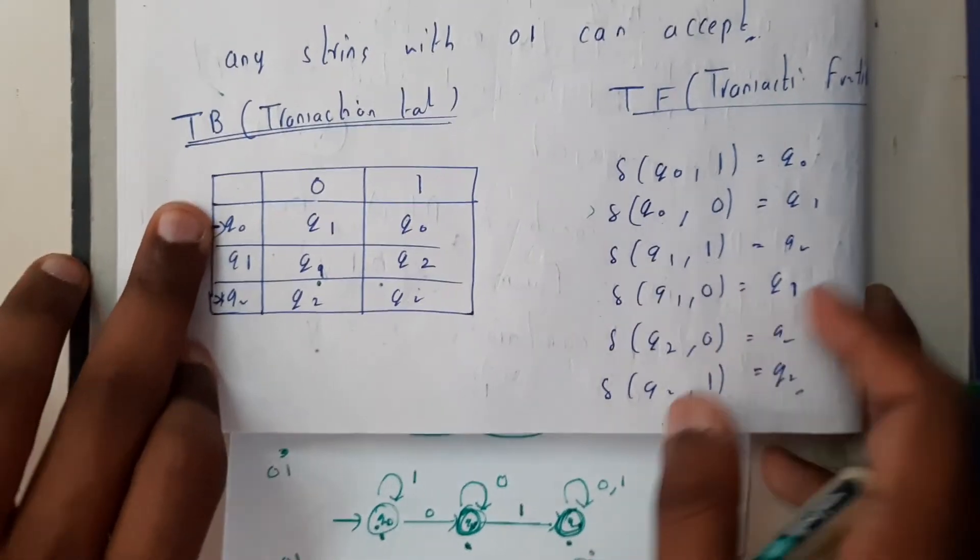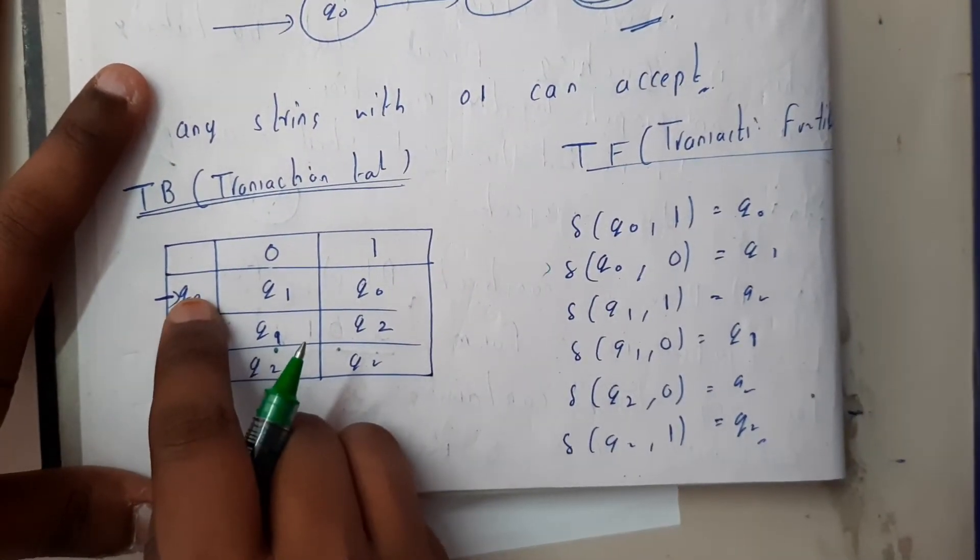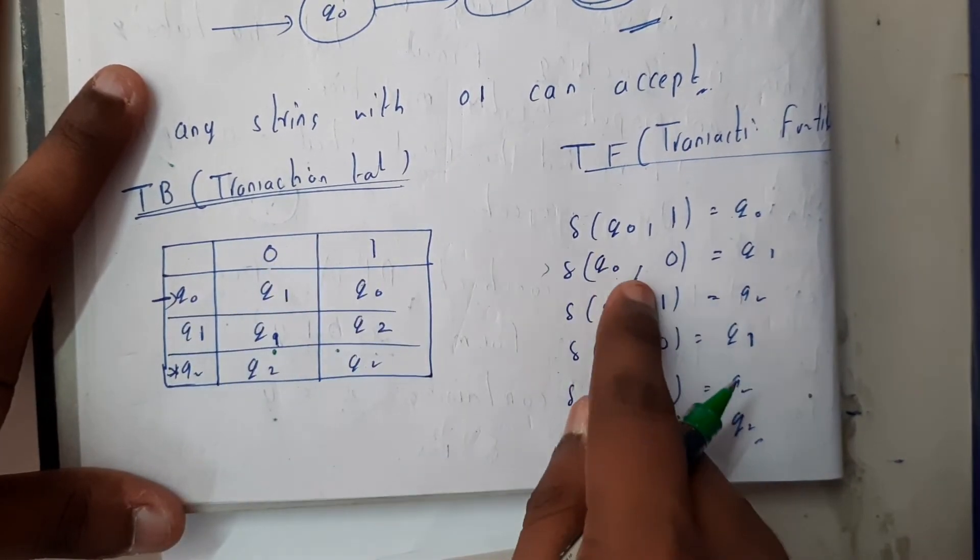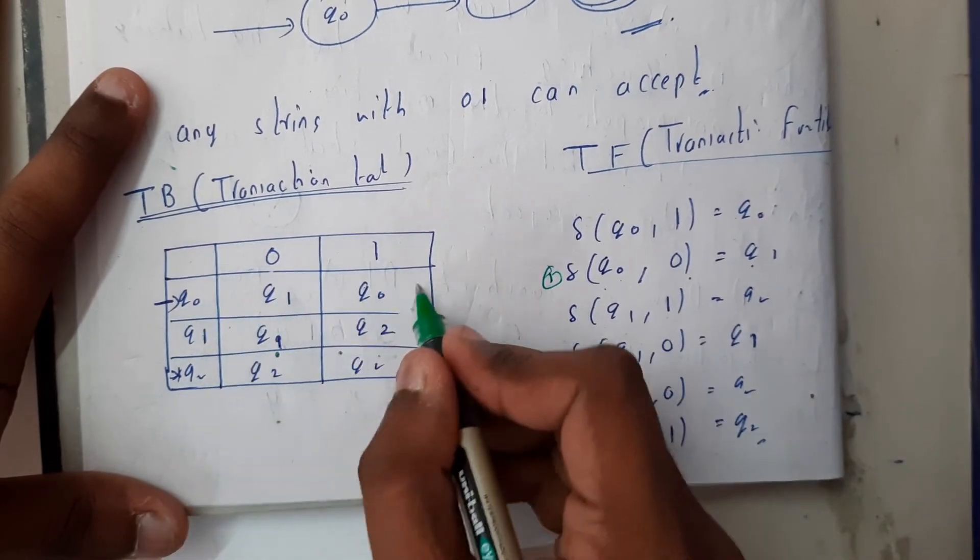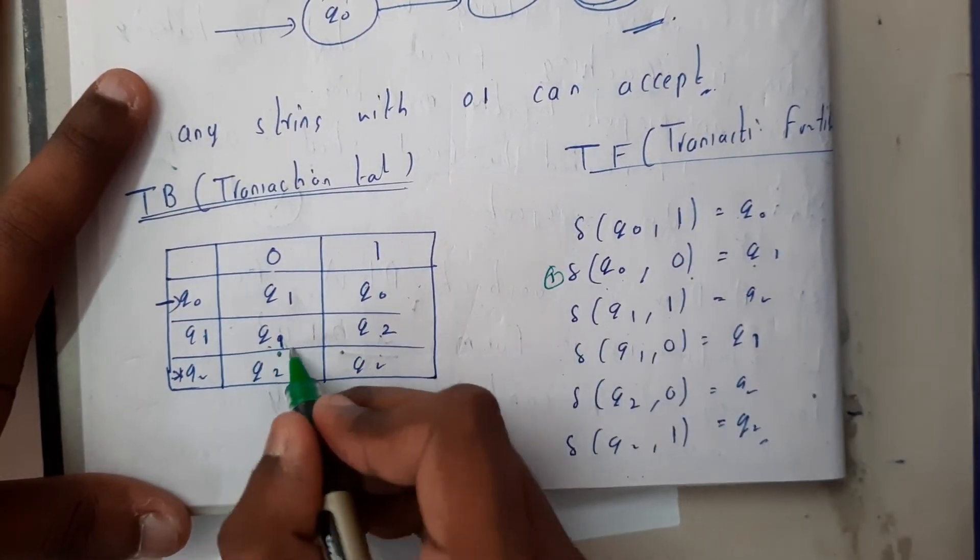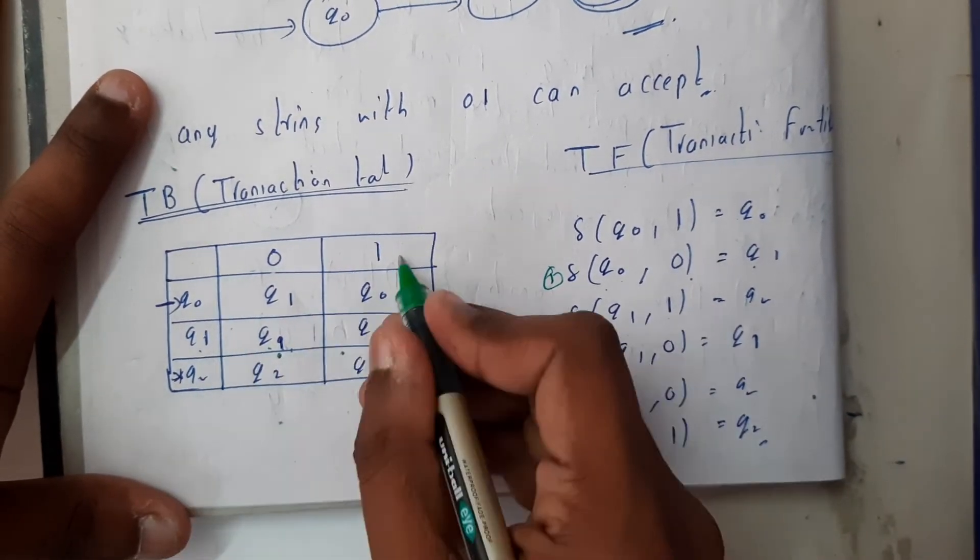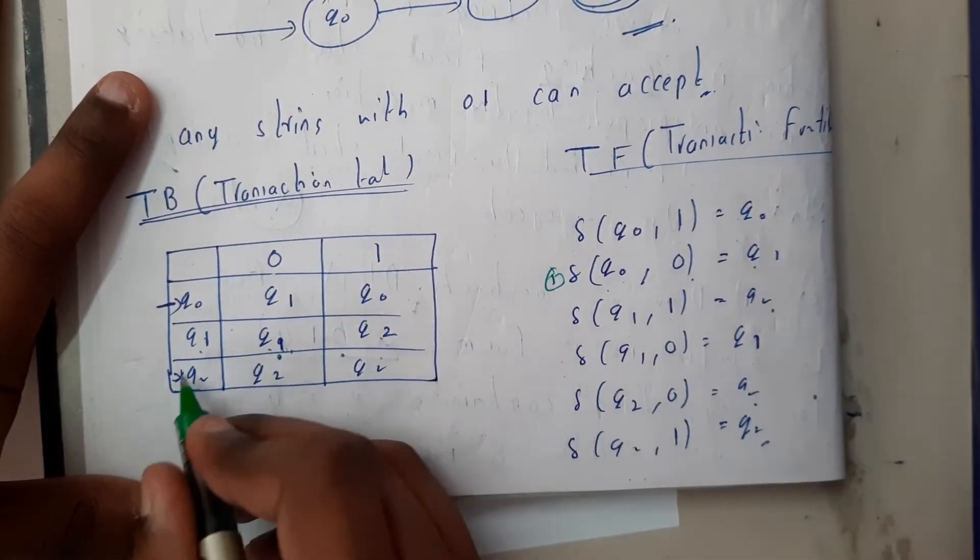Q1 on zero q1, q1 on one q2, q2 on zero q2, q2 on one q2. Now using this table, just write the functions. On q0 with zero, first I have written q0 on zero it is q1. On q0 on one it is q0. On q1 on zero is q1. On q1 on one is q2. On q2 on zero is q2. Q2 on one is q2.